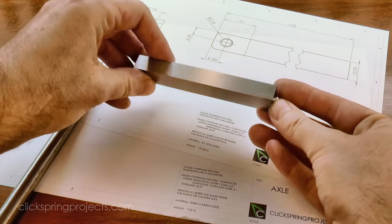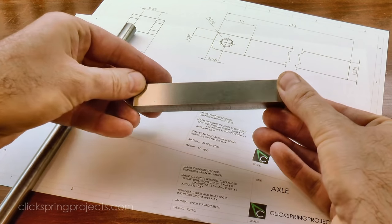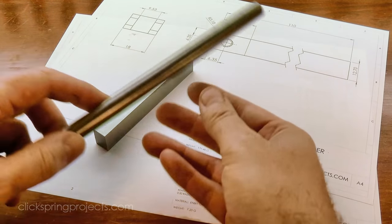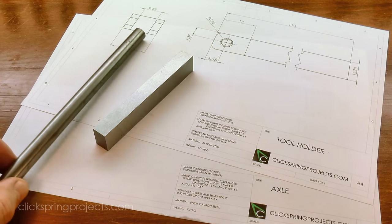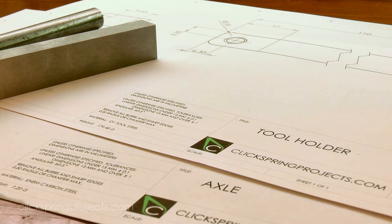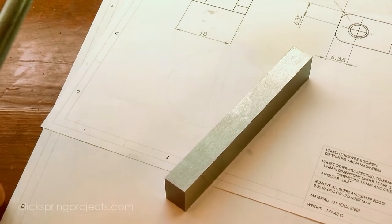The main body section doesn't really need to be hardened, but I'd like it to last well, so I'm going to make it from O1 tool steel. The axle will definitely benefit from being hardened, so I'm making that from EN8 carbon steel so I can quench harden it later. So let's get started.